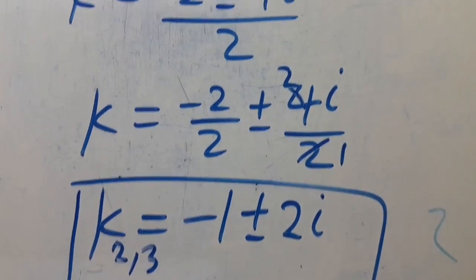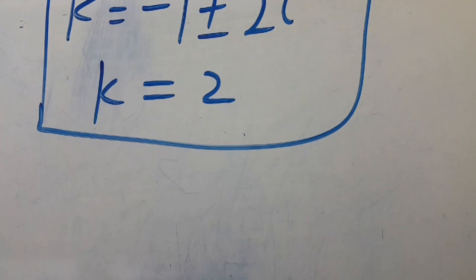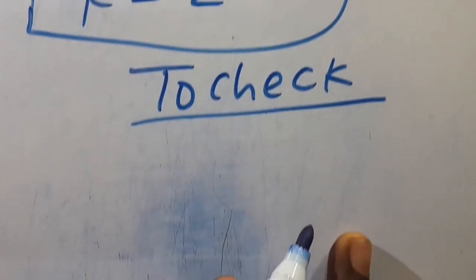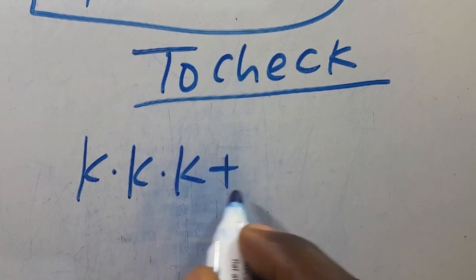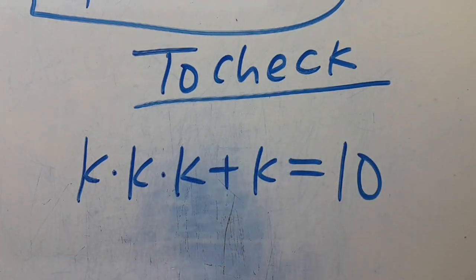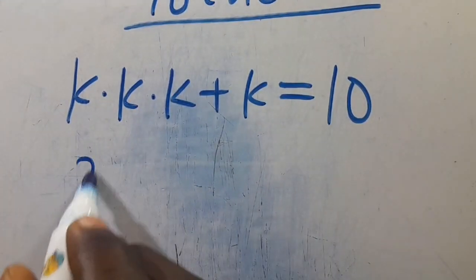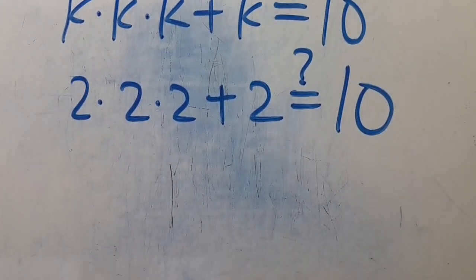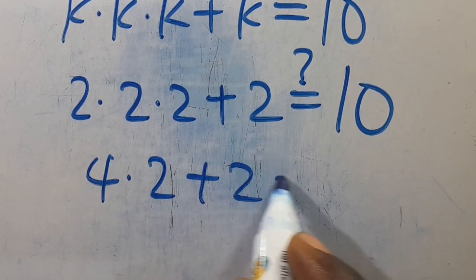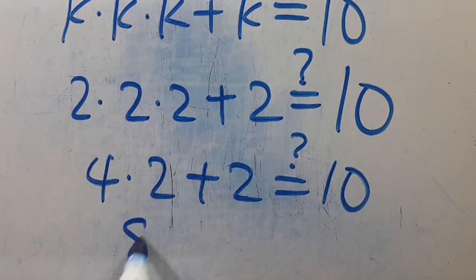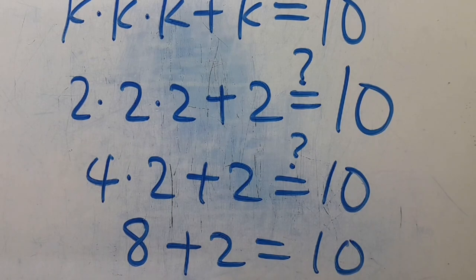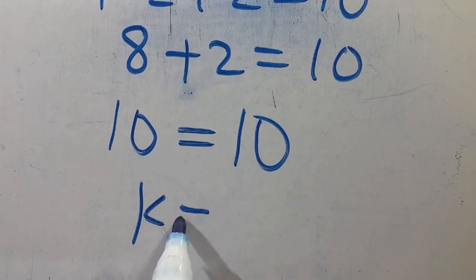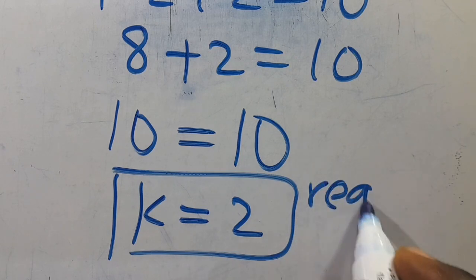Let us check. From here, we verify: k multiplied by k multiplied by k plus k equals 10. When k equals 2, we have 2 times 2 times 2 plus 2, which gives us 10. 4 times 2 gives us 8 plus 2, which equals 10. So 10 equals 10, confirming k equals 2 satisfies the equation, and this is our real solution.